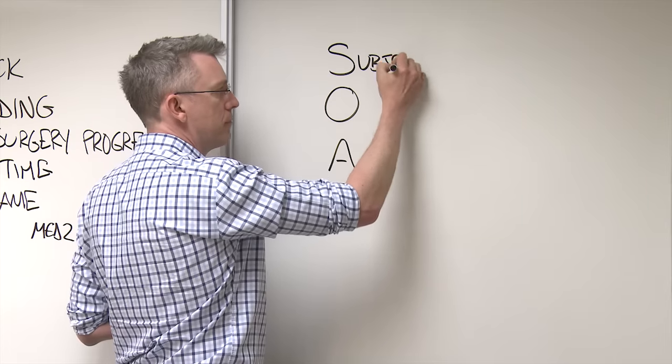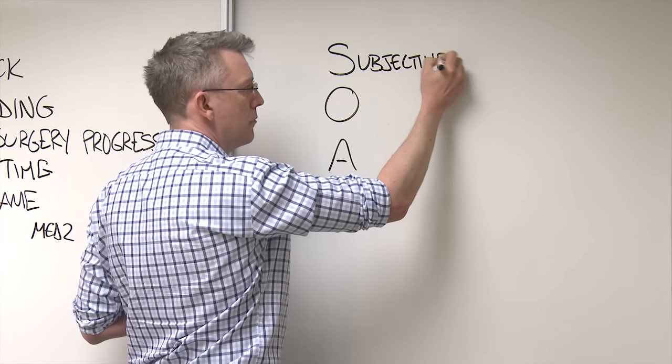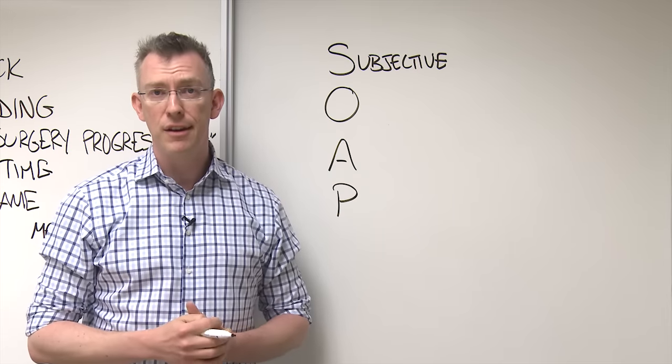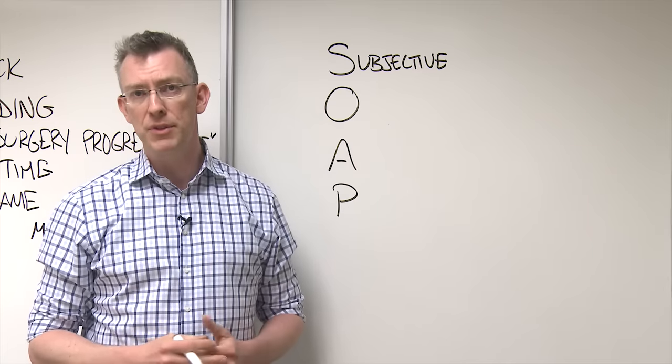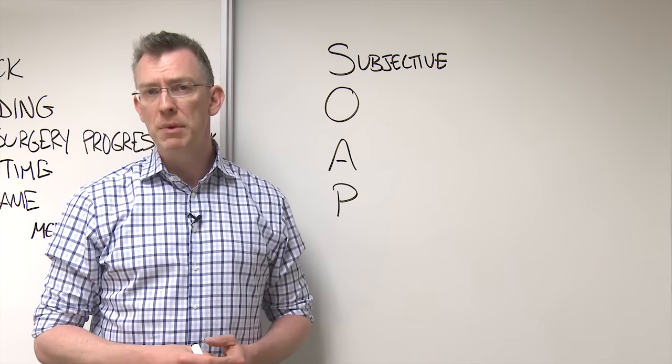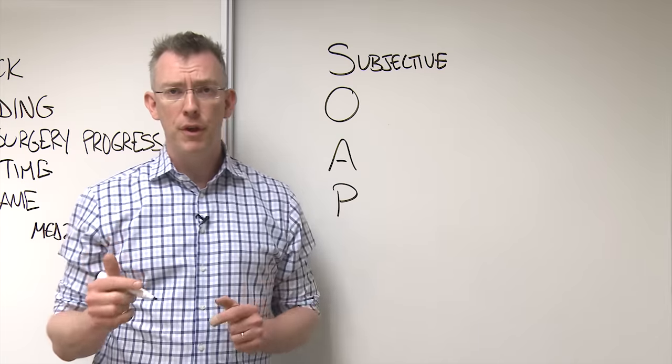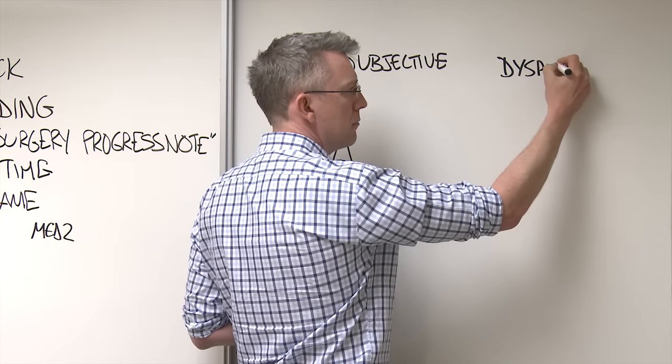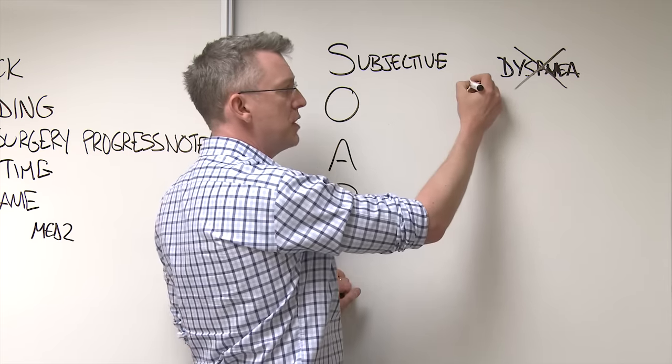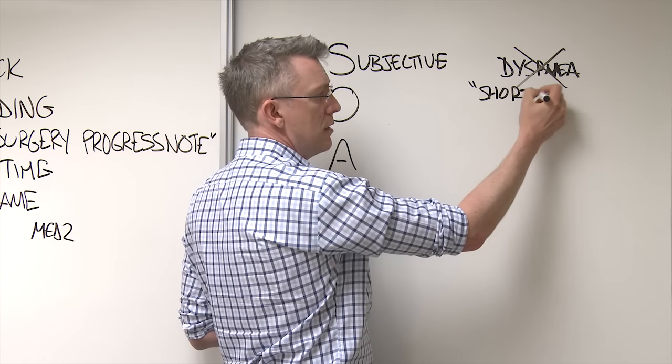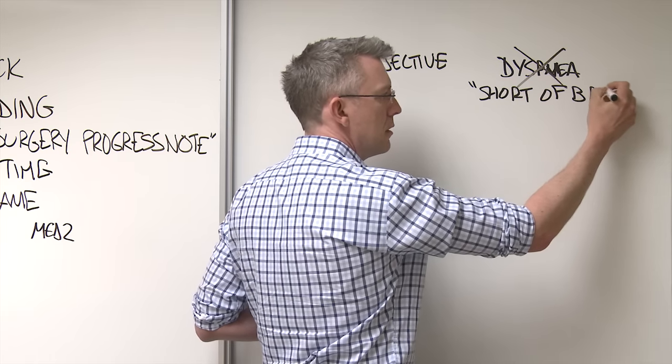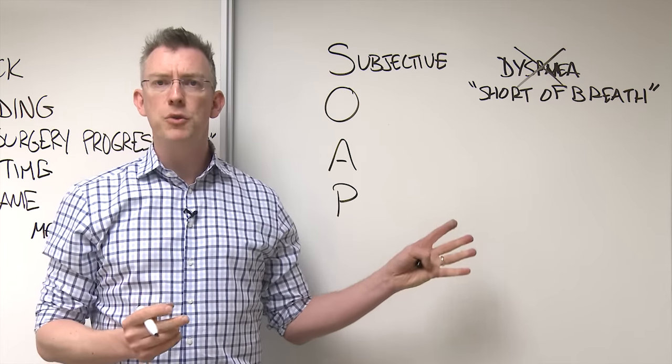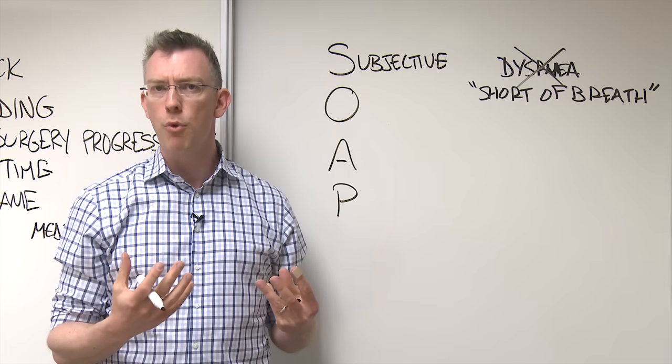And S is for subjective. So in all notes, you're going to be describing to some degree the story as you understand it. Often it's told by the patient or the patient's family themselves. And where possible, use their words. So if somebody says, I'm short of breath, don't say, don't write down patient had dyspnea for four days. No, you don't say dyspnea. You actually say patient describes being short of breath times five days.